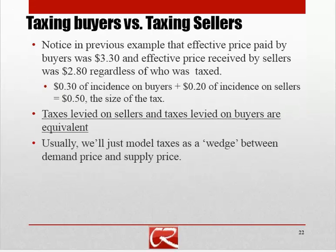In our previous example, in the last video segment, we saw that the effective price paid by the buyers was $3.30, no matter who was taxed. And the effective price the sellers got to keep was $2.80, no matter who was taxed. So notice that relative to the equilibrium price of $3, the buyers were always $0.30 worse off because they always paid $3.30, and the sellers were always $0.20 worse off because they only got to keep $2.80 instead of $3.00.